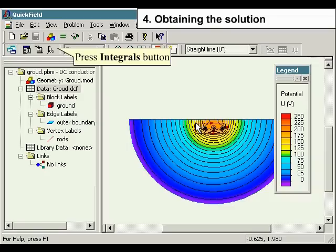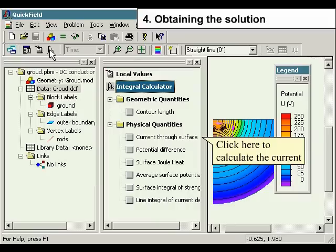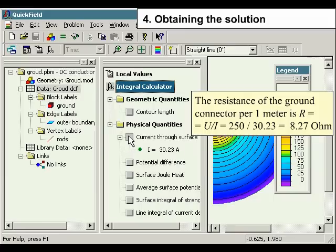Press integrals button. Click here to calculate the current. The resistance of the ground connector per one meter is 8.27 ohm.